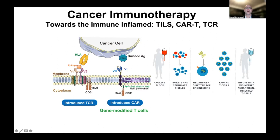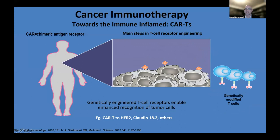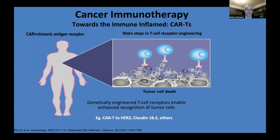Both TCR therapy and CAR T cells are under intensive investigation. Early phase data include antigens like claudin 18.2 and HER2 as targets. To show the process: a patient's blood is taken, T cells are extracted, engineered to express a specific receptor, expanded, and then re-infused, with the goal of infiltrating the tumor and targeting cancer cells based on the designed epitopes. CAR T examples currently in clinical trials include HER2 and claudin 18.2 as antigens.